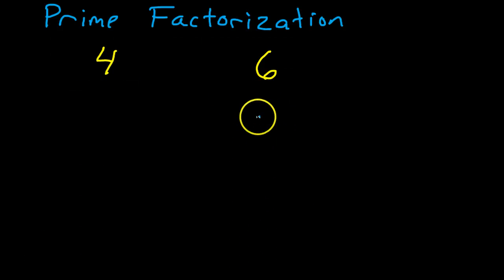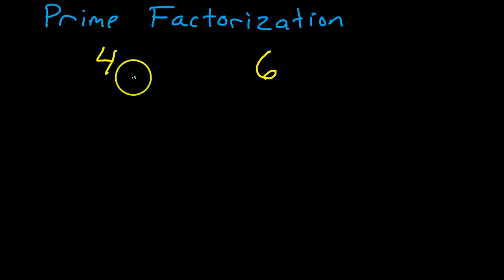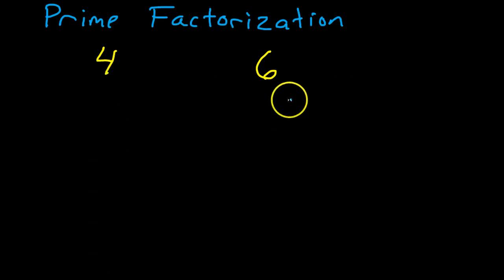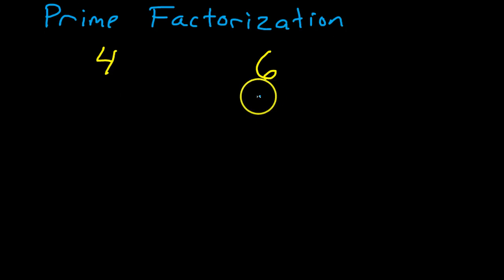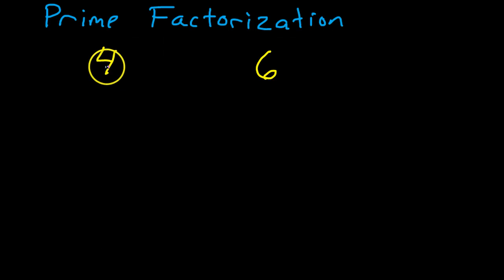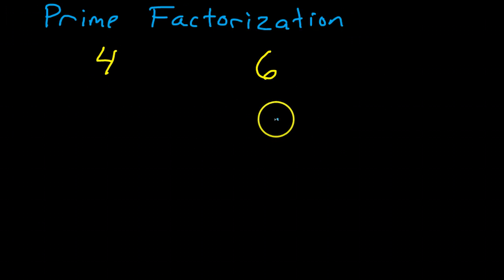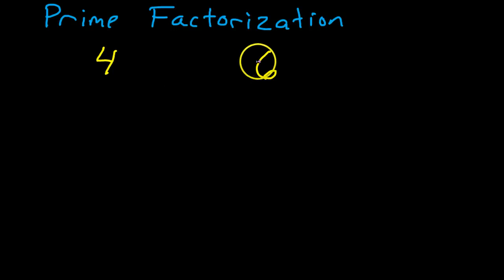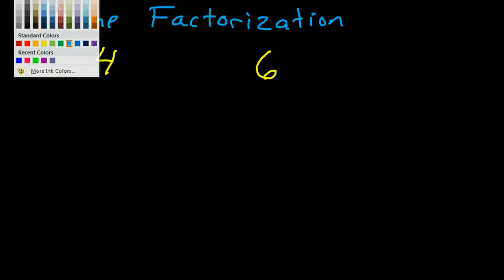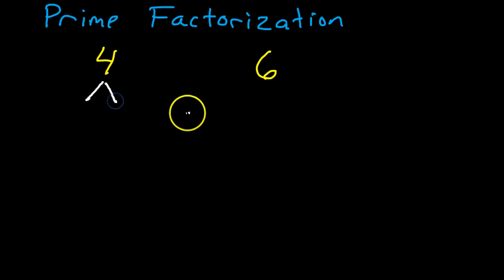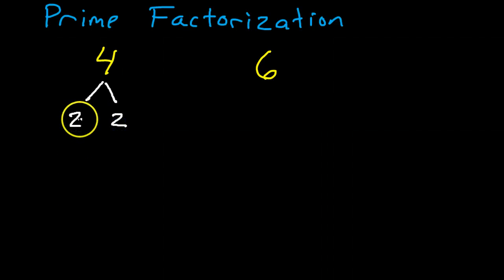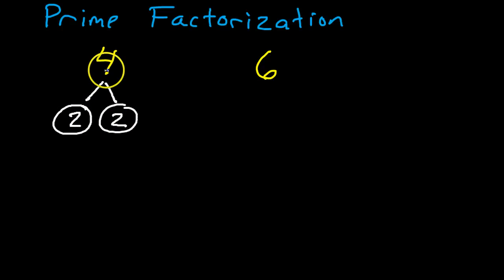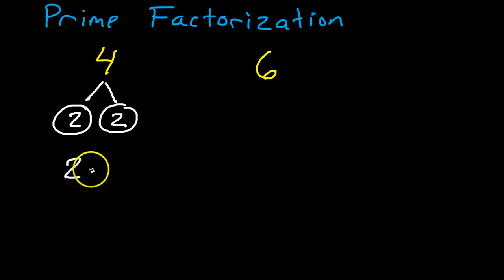Let me show you how prime factorization can help you find the least common multiple. When numbers are small like this, it's easy to find the least common multiple in your head. But I want to teach you the skill of prime factorization for when it's not so obvious, when the numbers are not so small. So remember the factor tree — the factor tree will help you find the prime factorization. 4 is 2 times 2, and both are prime numbers. So the prime factorization of 4 is simply 2 times 2.